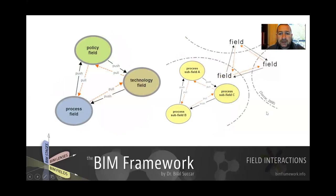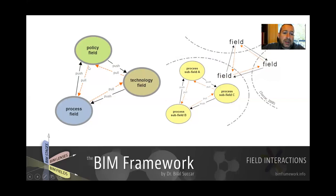Another way of looking at these fields is through interactions. The model depicts a push and pull interaction between the fields. For example, engineering within the process field would request that a university teach certain topics — that's called a pull request. Conversely, the university generates student engineers and pushes them into the process field to be hired.